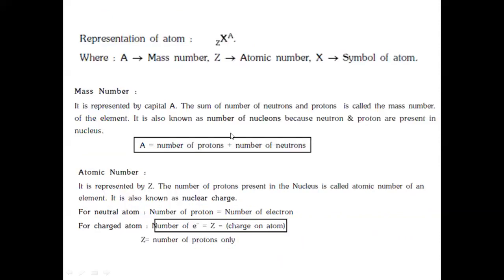The representation of an atom is ᴬzX, where Z is the atomic number, A represents the mass number, and X is the symbol of the atom. Mass number is the total number of protons and neutrons present in the nucleus, hence also considered as total number of nucleons. Atomic number Z for a neutral atom: number of protons equals number of electrons, which is equal to Z minus charge. Z represents the number of protons only.